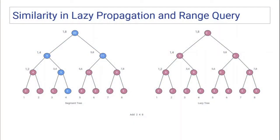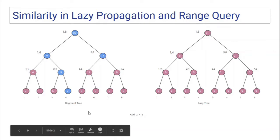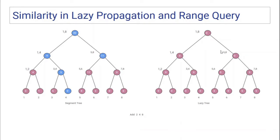We already know theoretically how segment tree works. We will be having two different arrays — one for the segment tree and one for lazy. The lazy array is like a diary where you keep your pending updates.